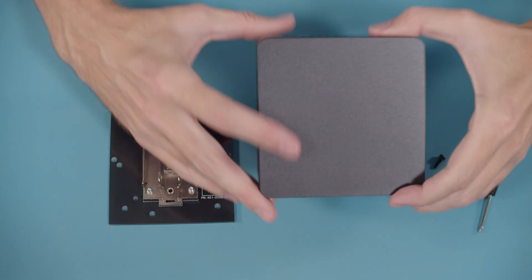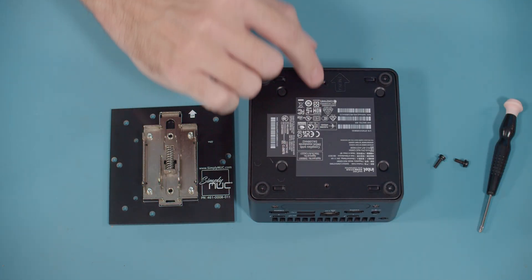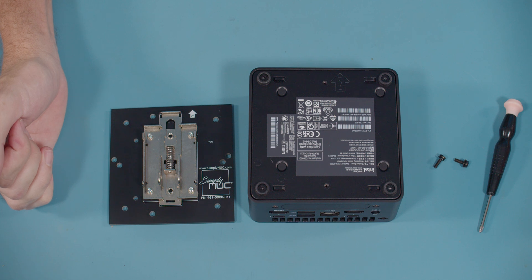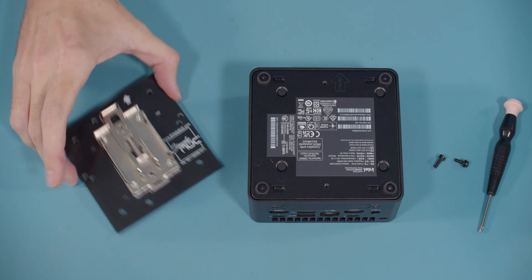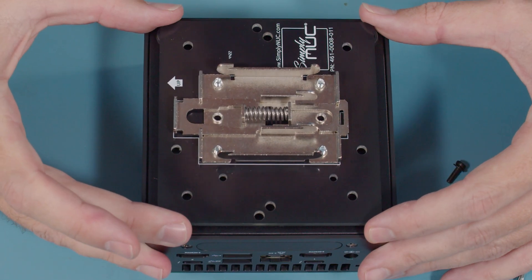So the first thing you want to do is flip the unit over and you'll notice right away there's two screw holes. That's typically used for a VESA mount but today we're going to use it for the DIN rail mount. So you take your DIN rail mount, you line it up on the holes.